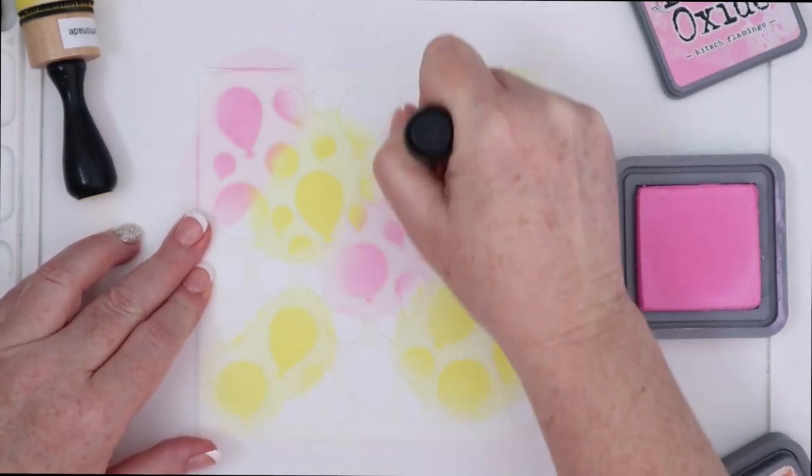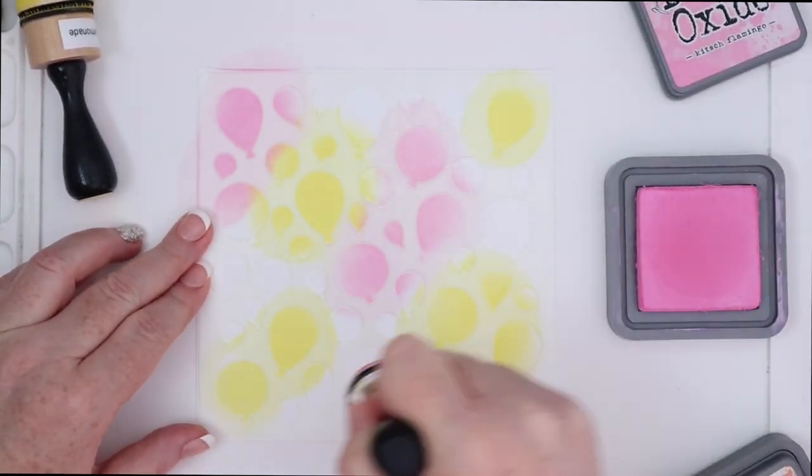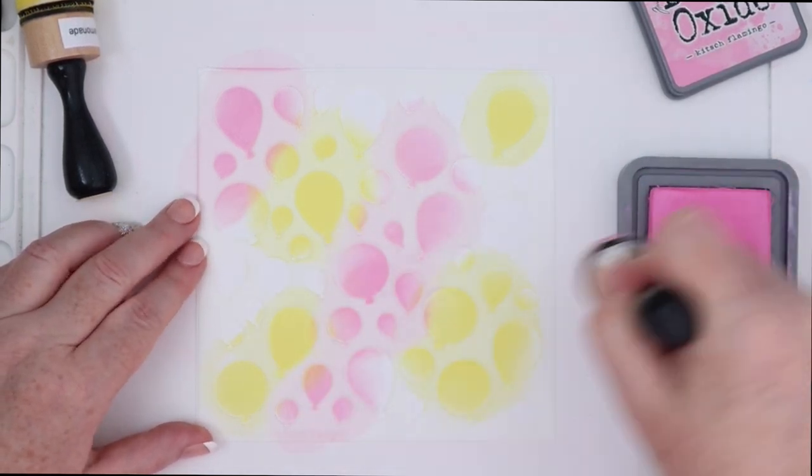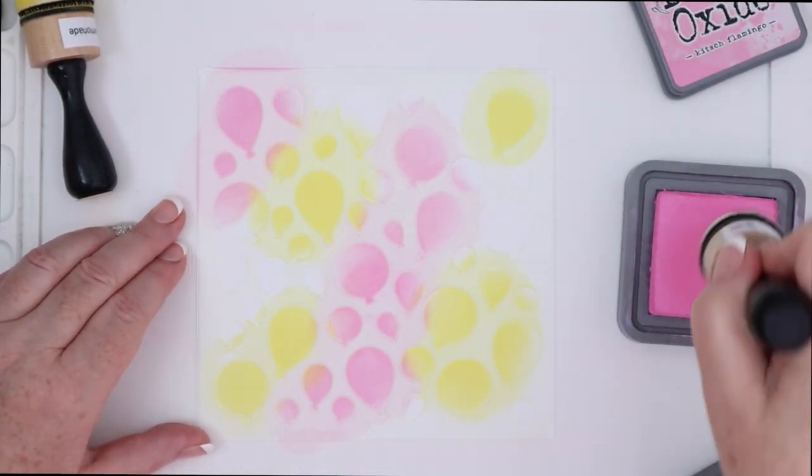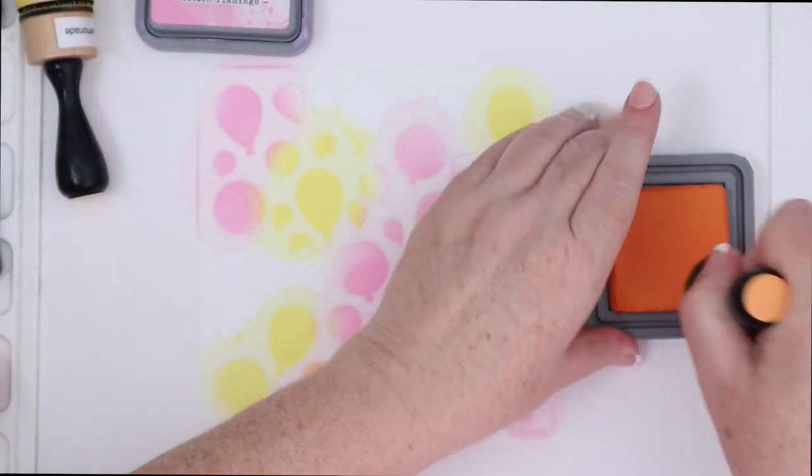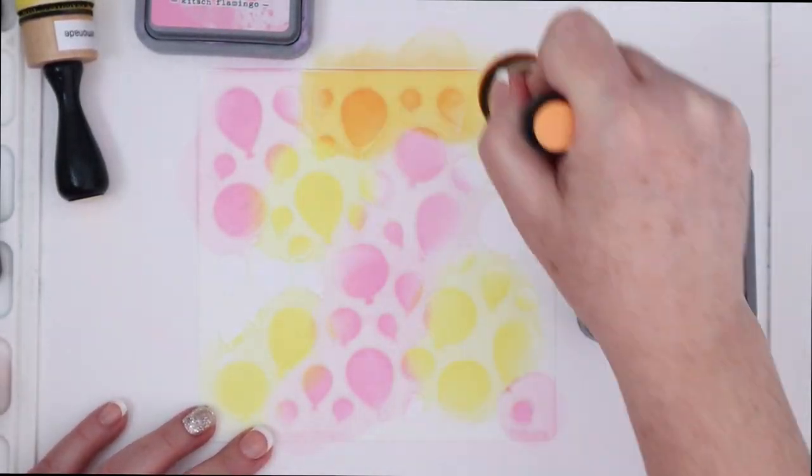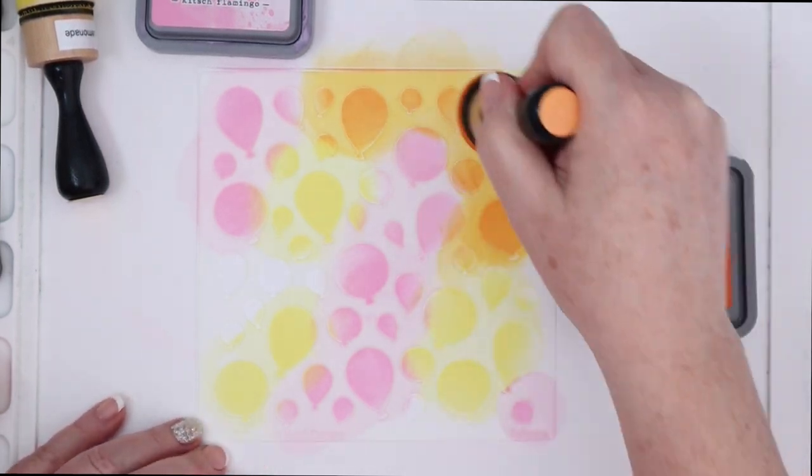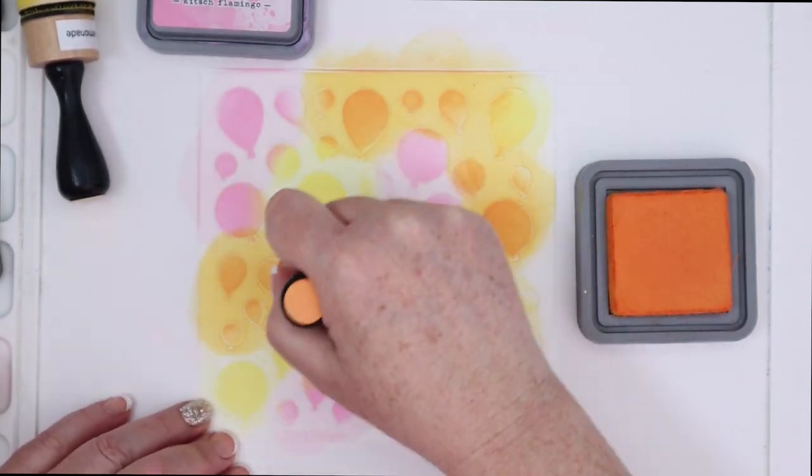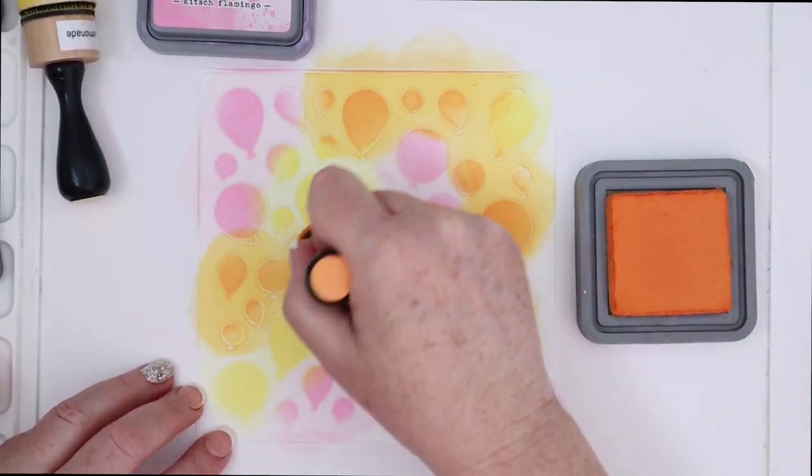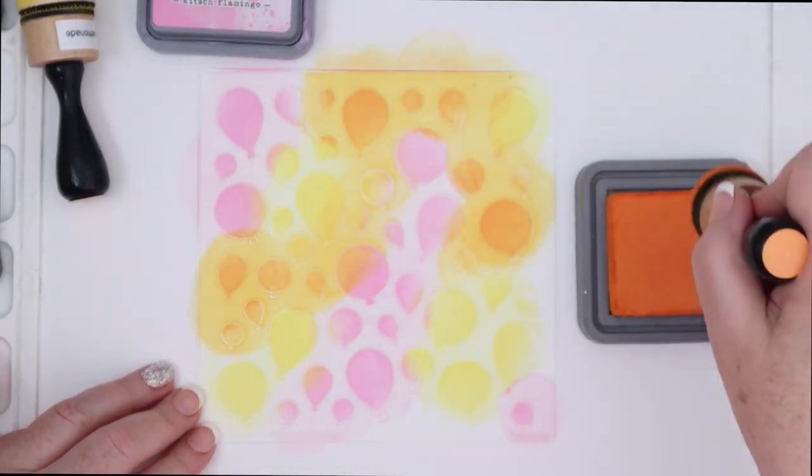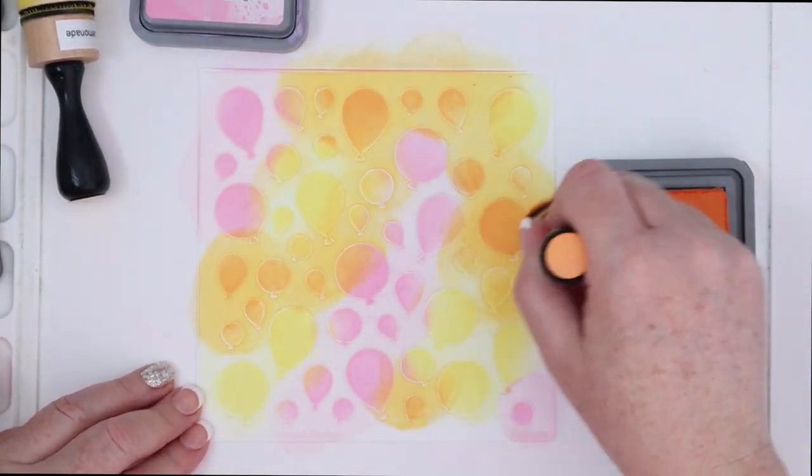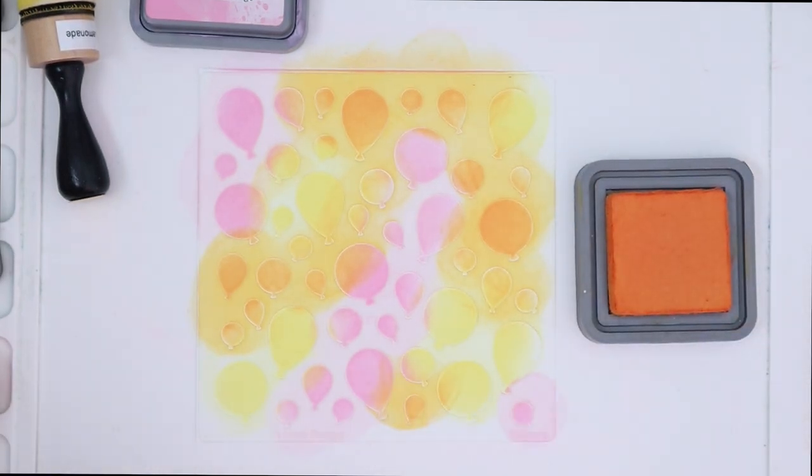So now I'm using Kitsch Flamingo. I started with Squeezed Lemonade. These two colors together are some of my favorites. I love this pink and this yellow together. I noticed that they create a little orange in between so I went in with some orange as well to create just a third color there. I am just throwing some color down. I'm not really being specific about where I'm putting which color. I just want a little bit of each, a little bit of crossover and to create a fun mishmash of these three colors.